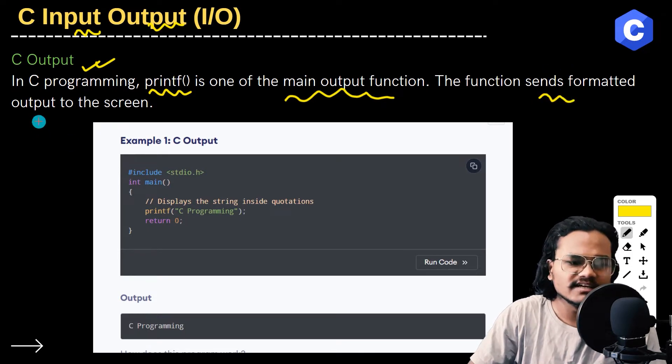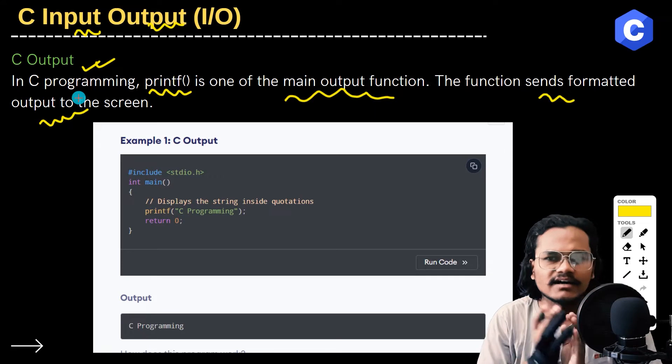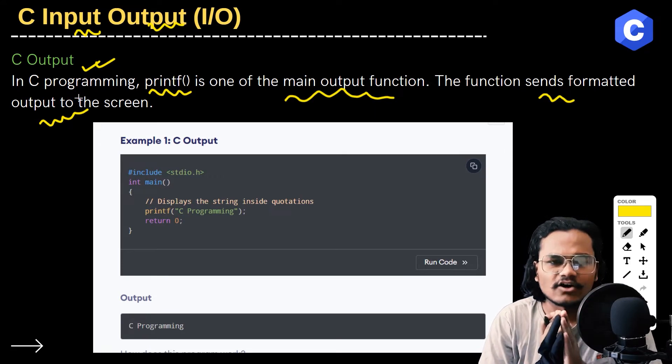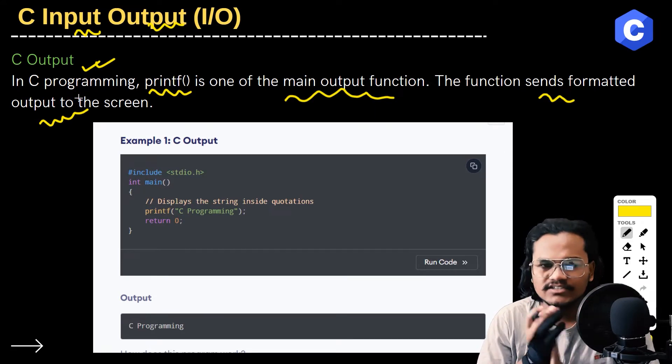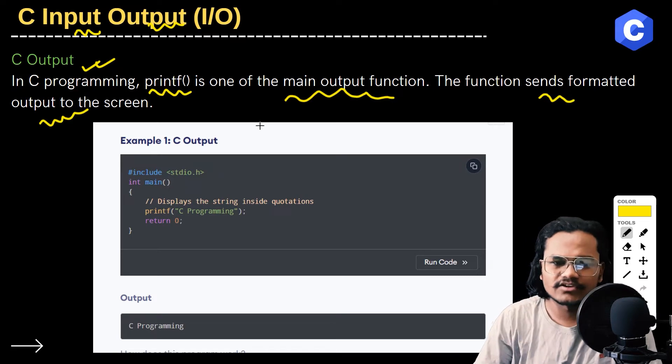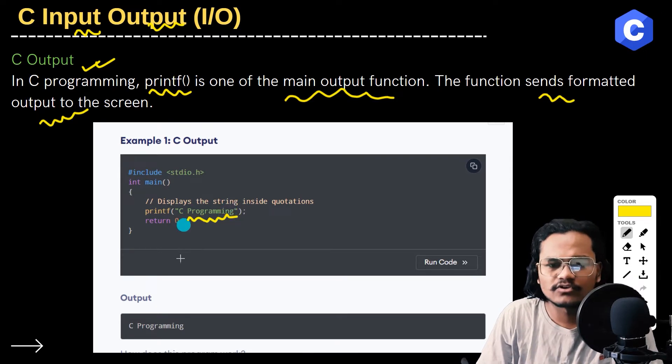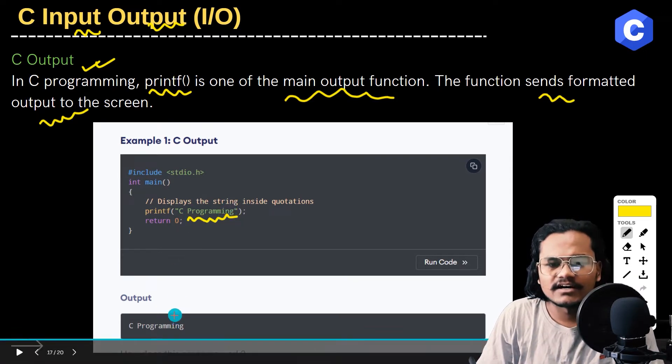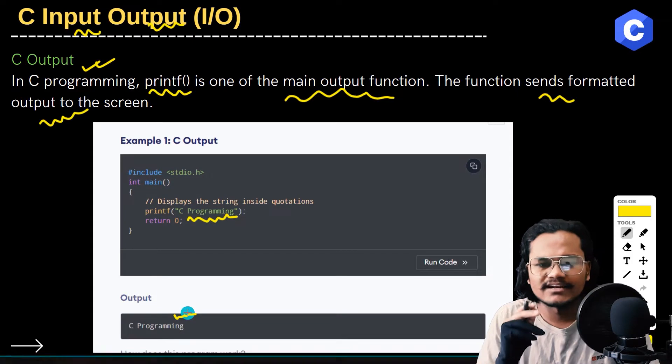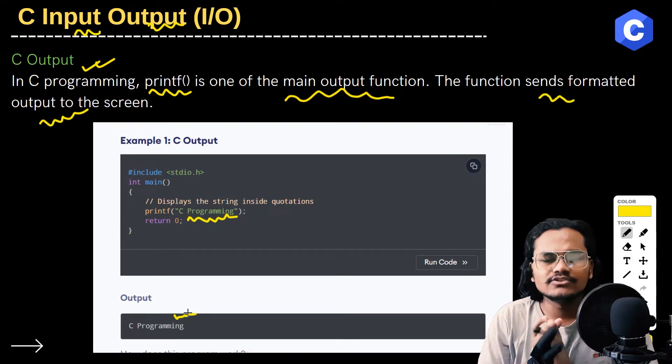This function sends formatted output to the screen. Printf is a formatted function that displays output. If you know about C programming, printf is used to send formatted output.